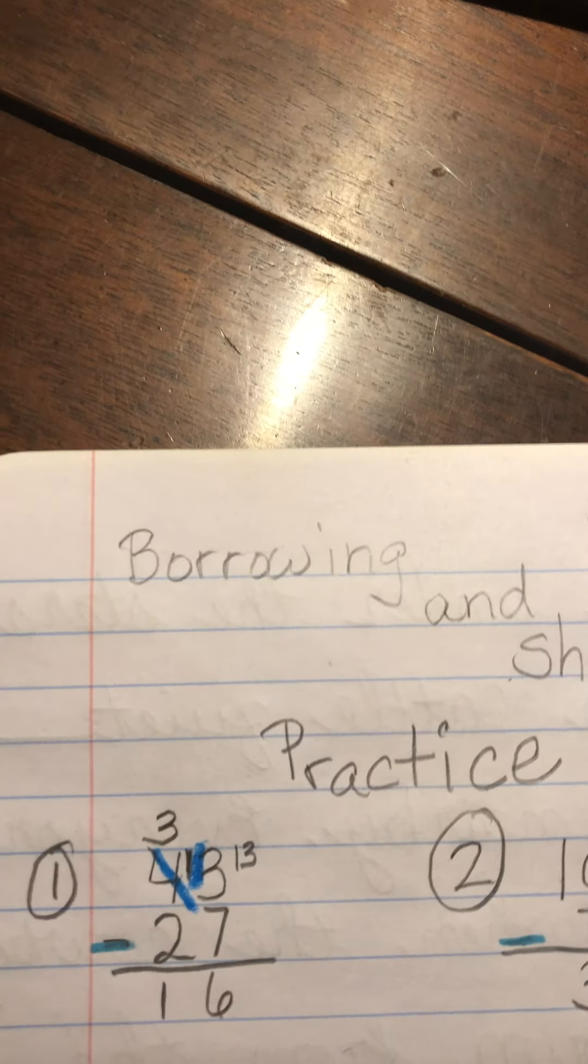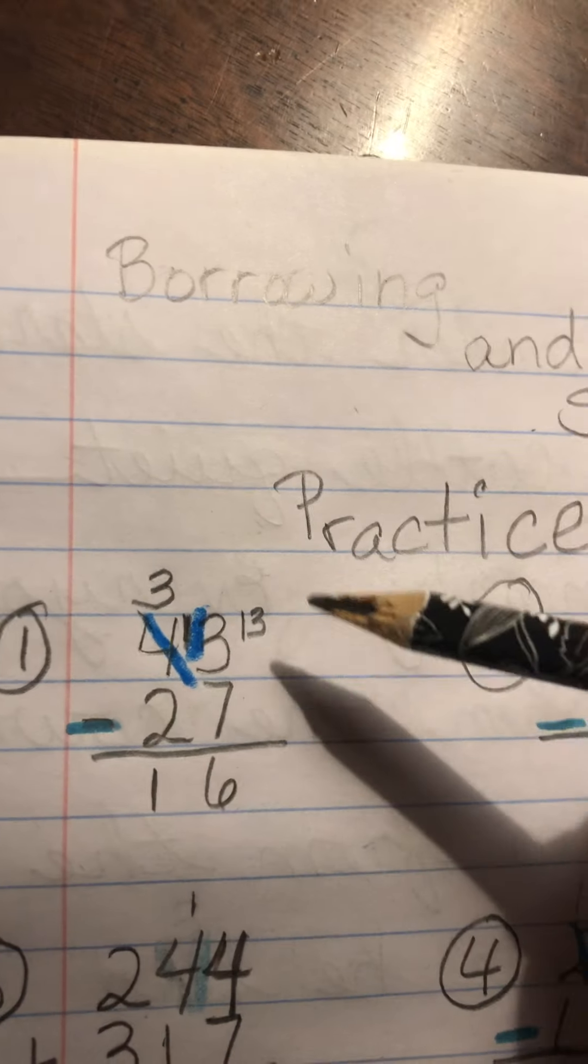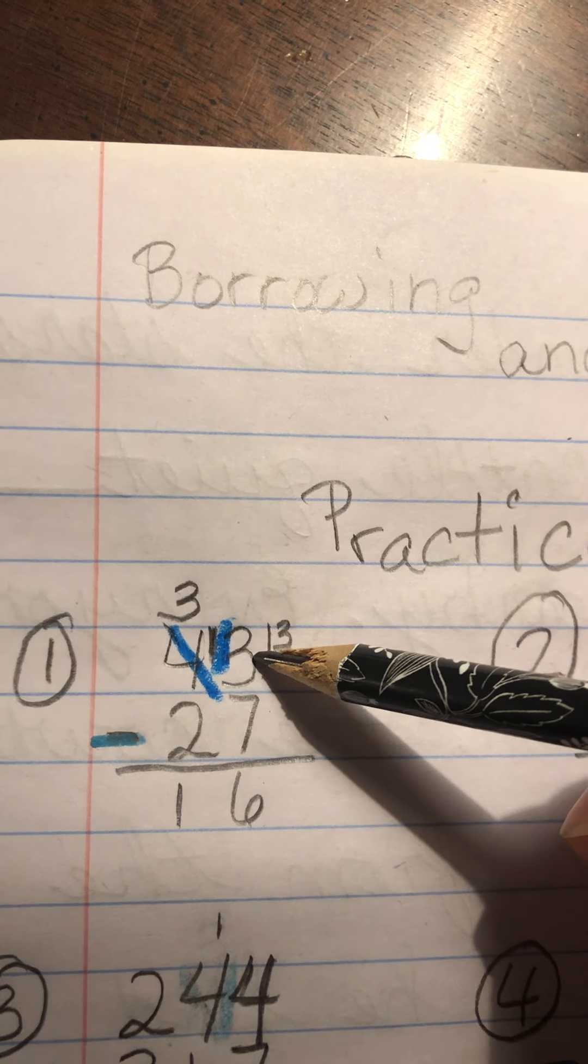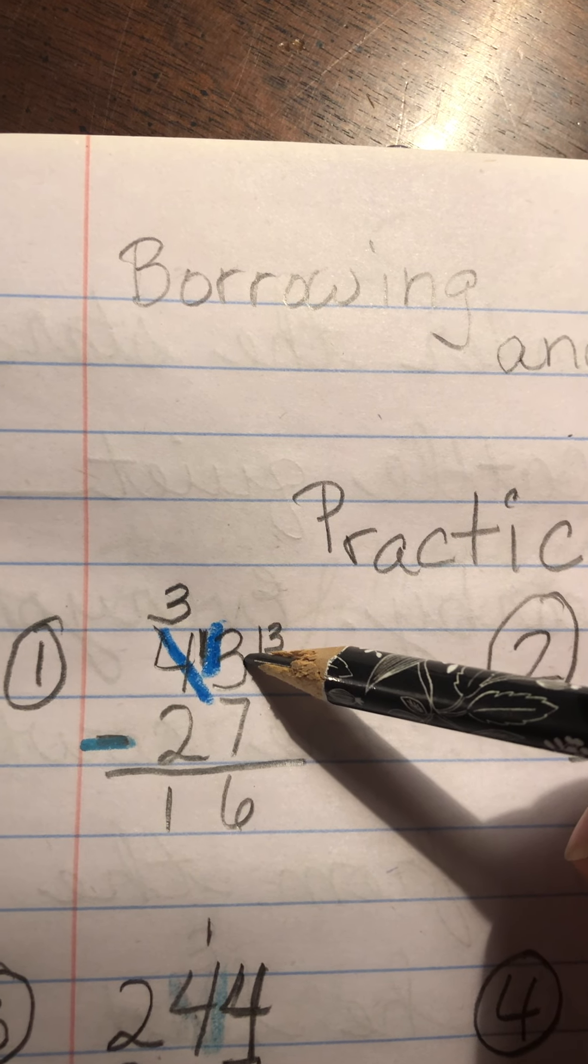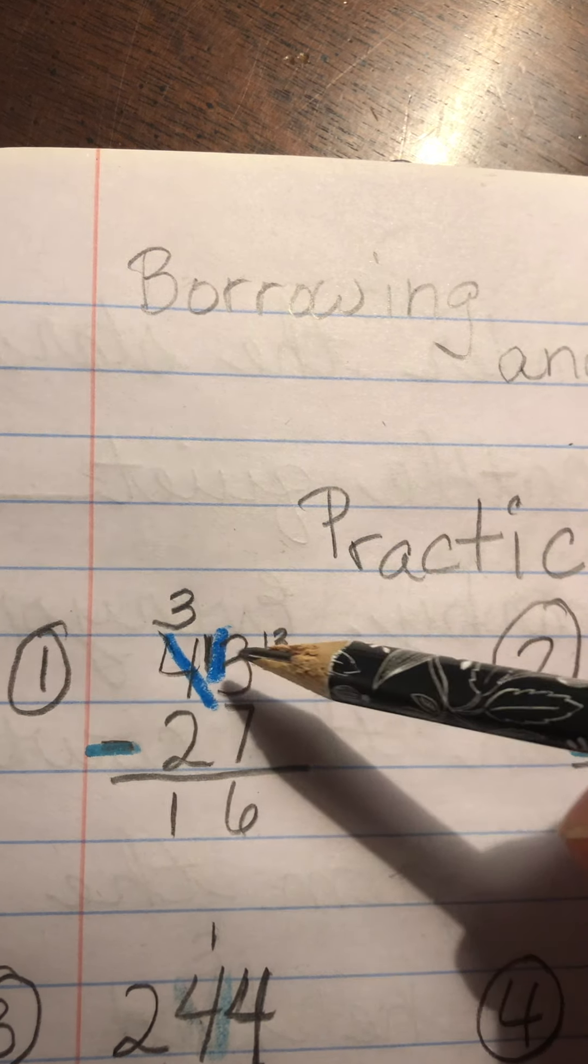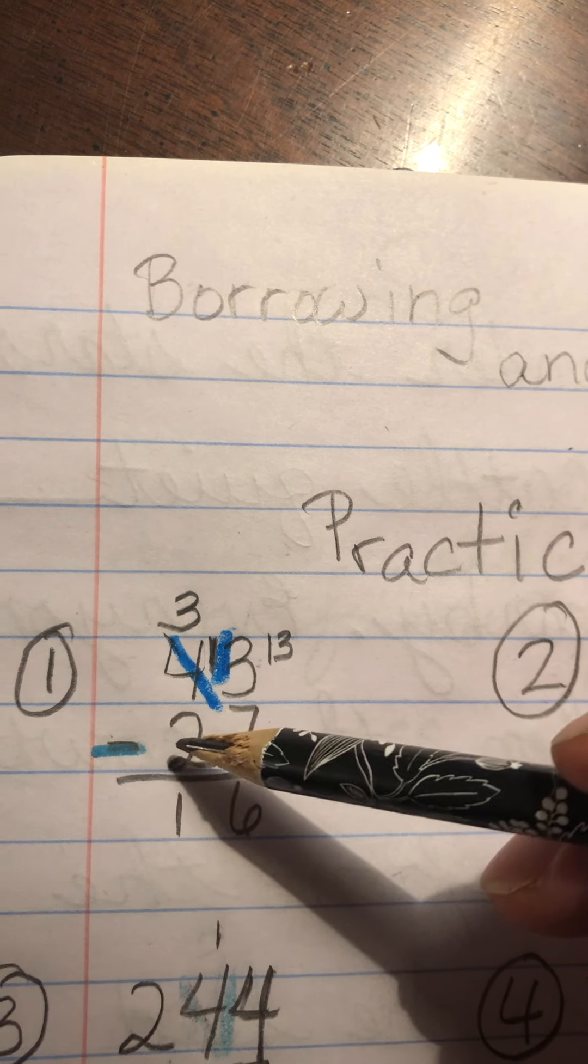Okay, it's time to review the questions and problems. Here's the first one. This was 3 and 7. 43 minus 27.